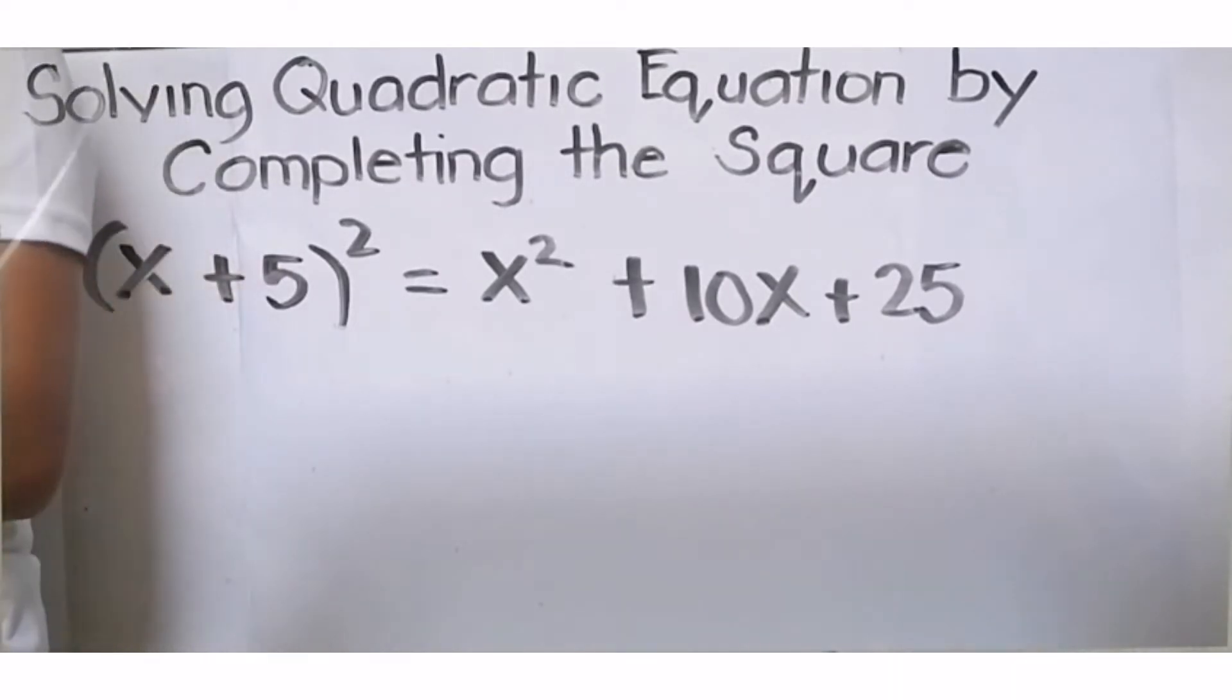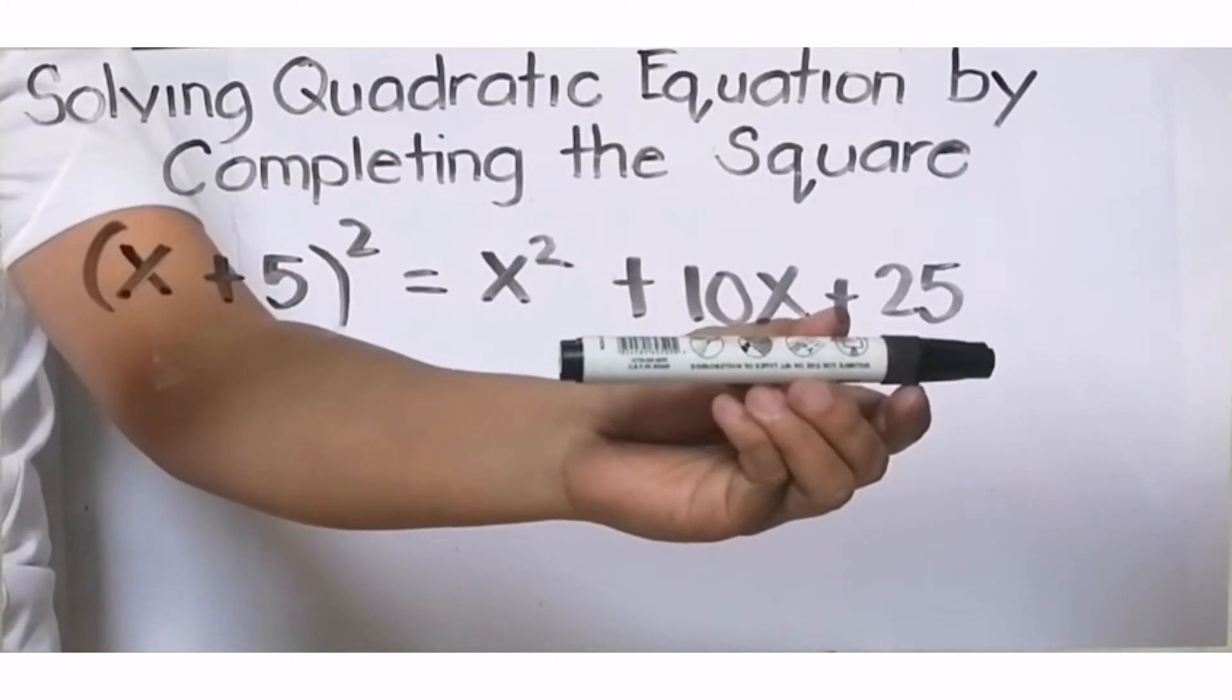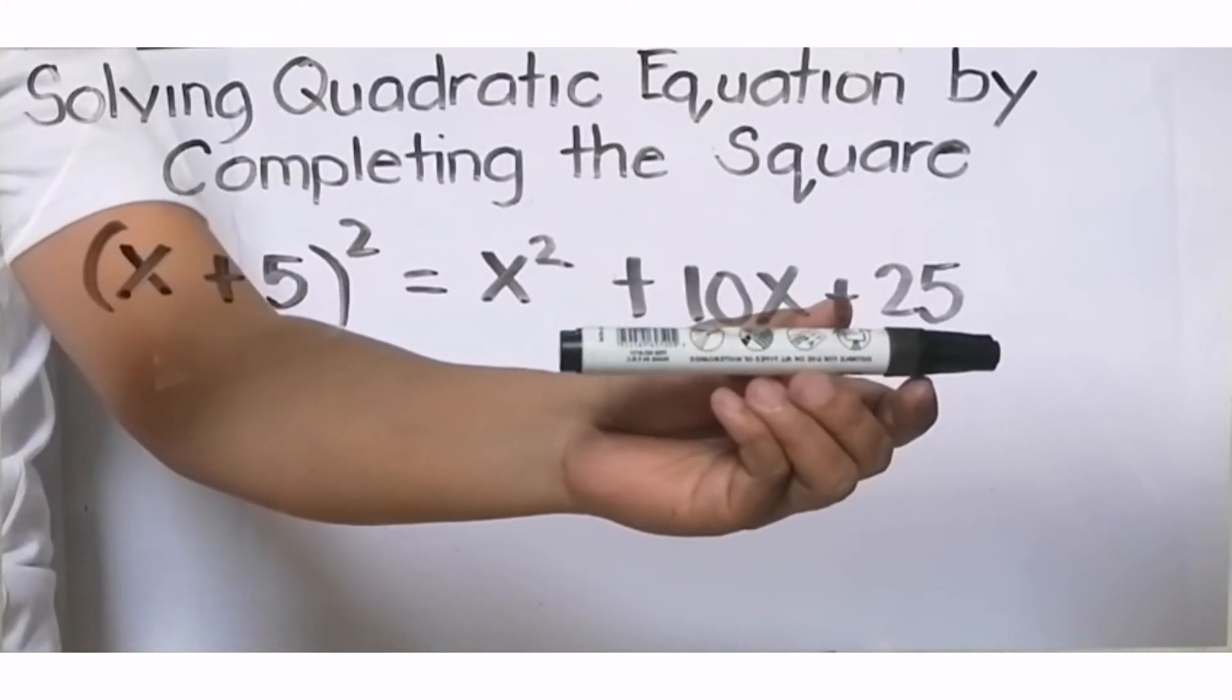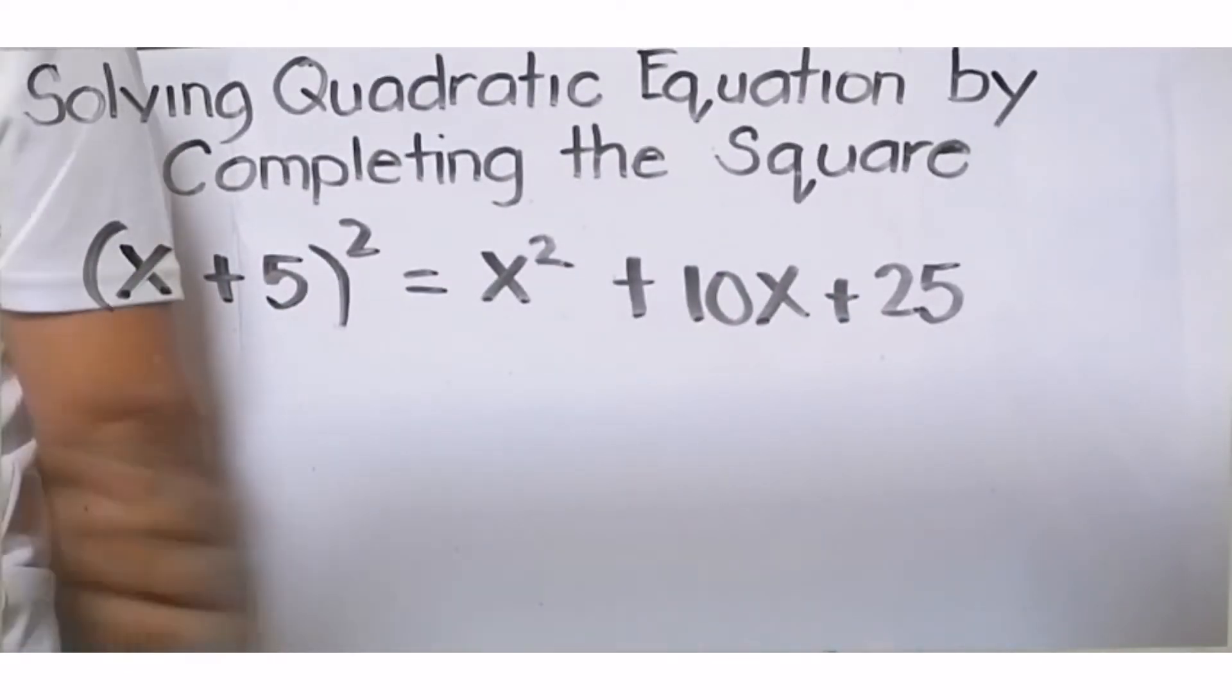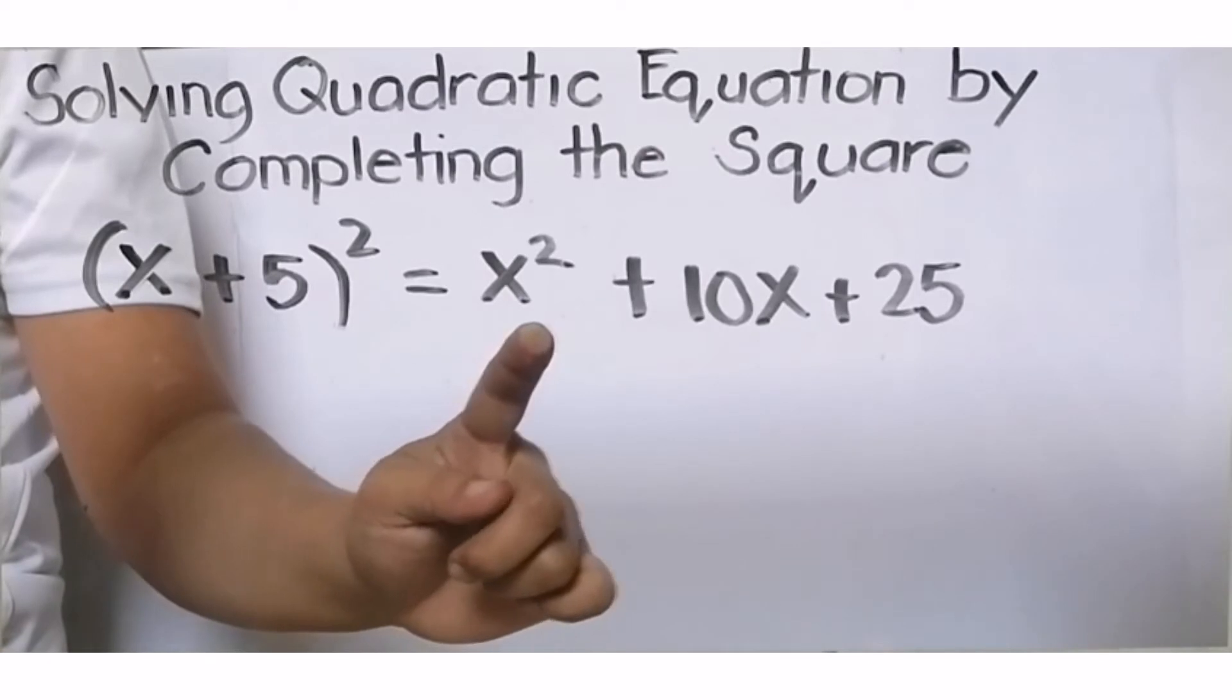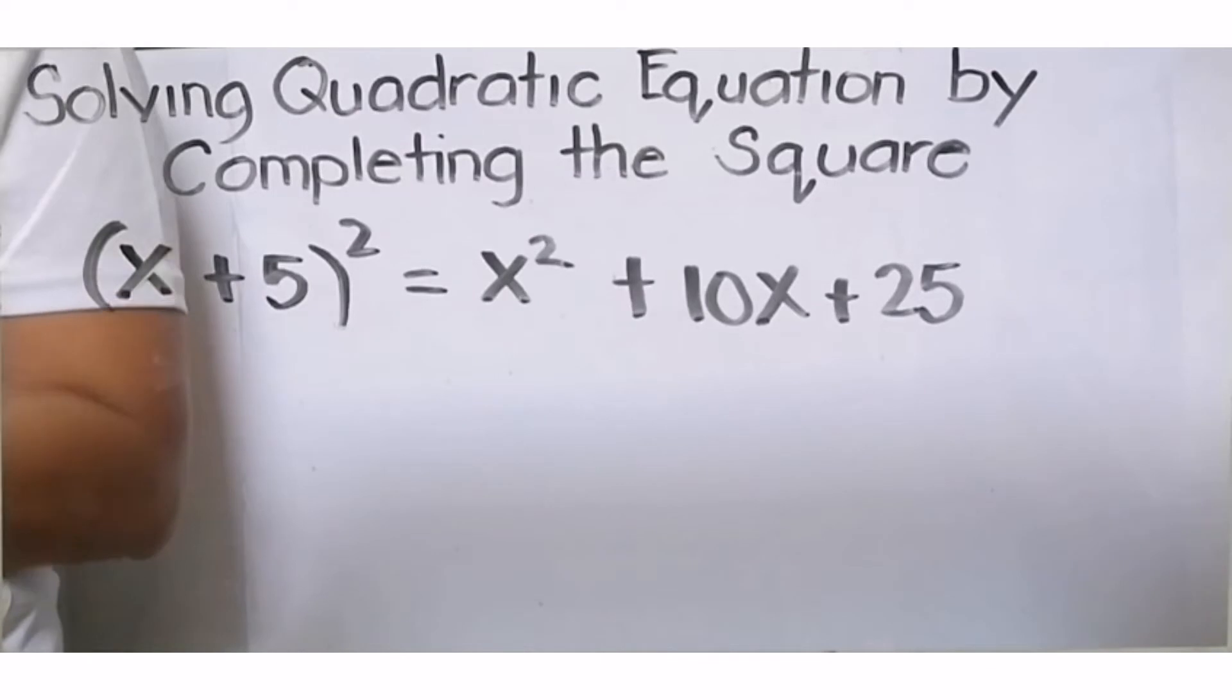Now we have obtained the square of our binomial X plus 5. Let's review: square the first term, double the product of the two terms, then square the last term. Those are the answers we got.